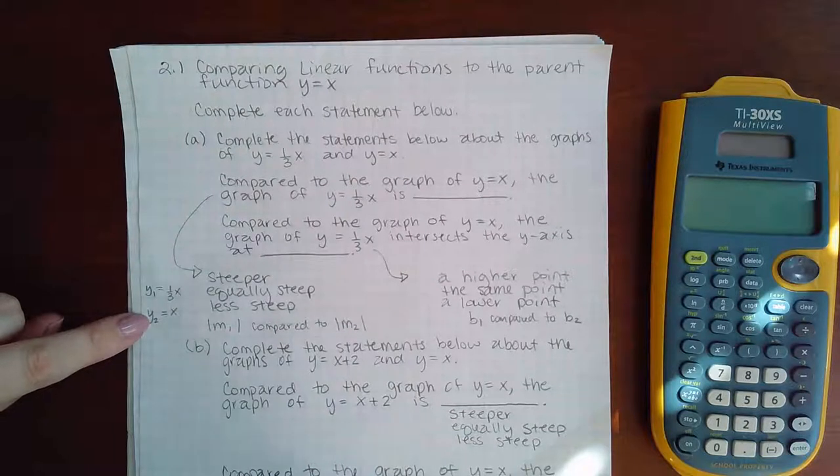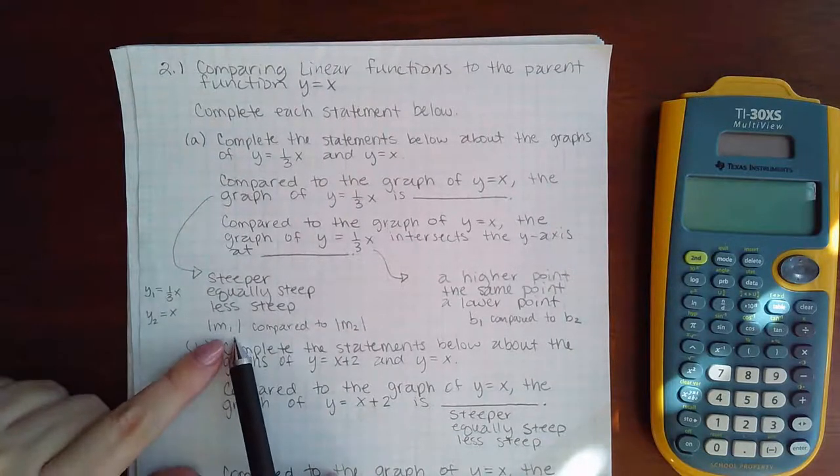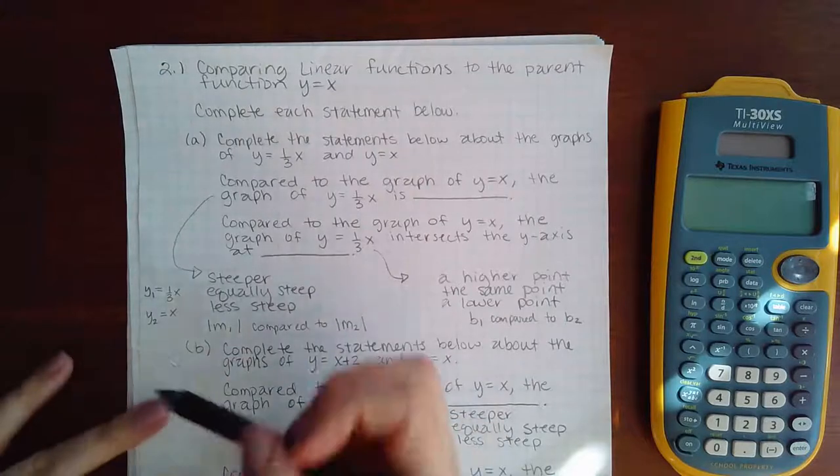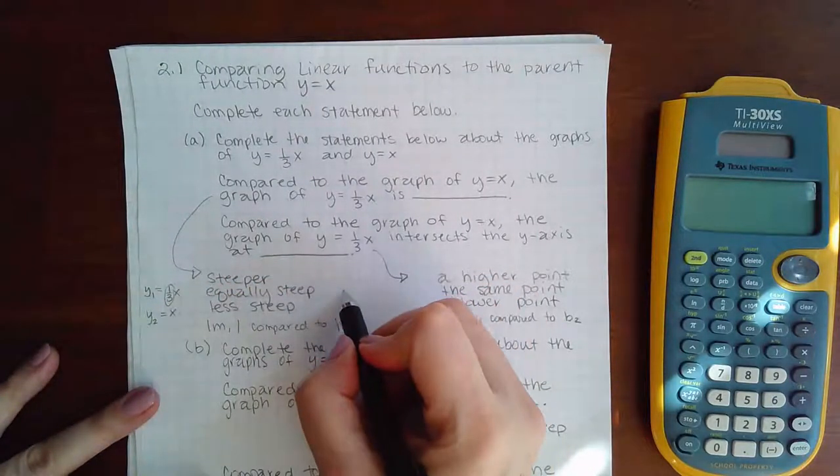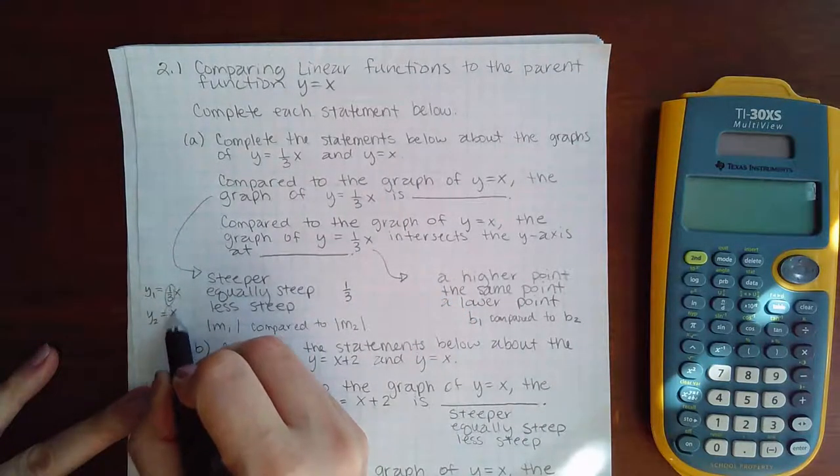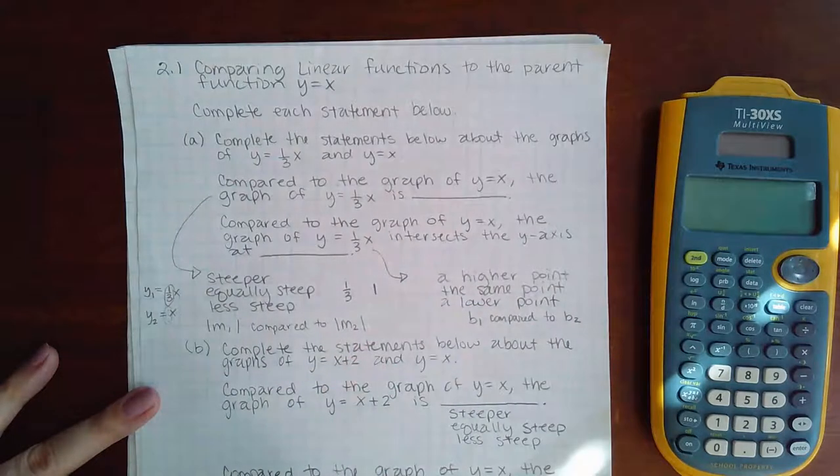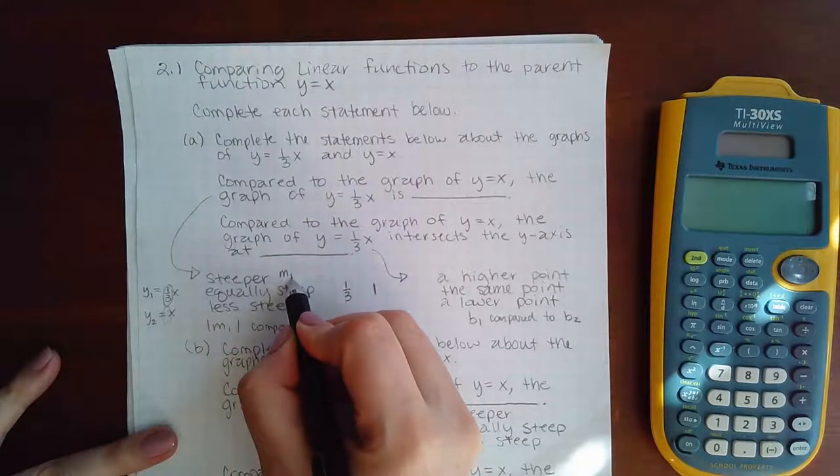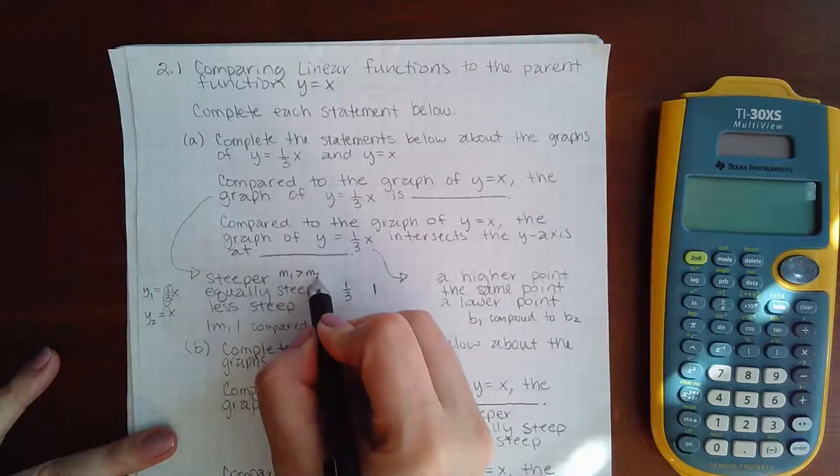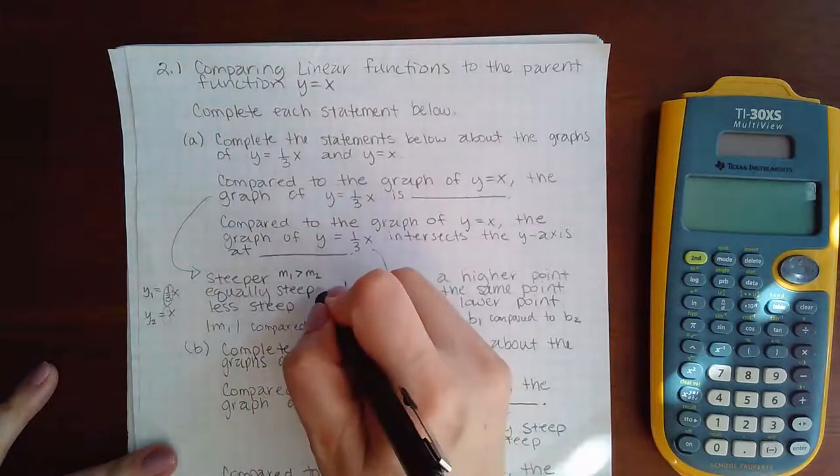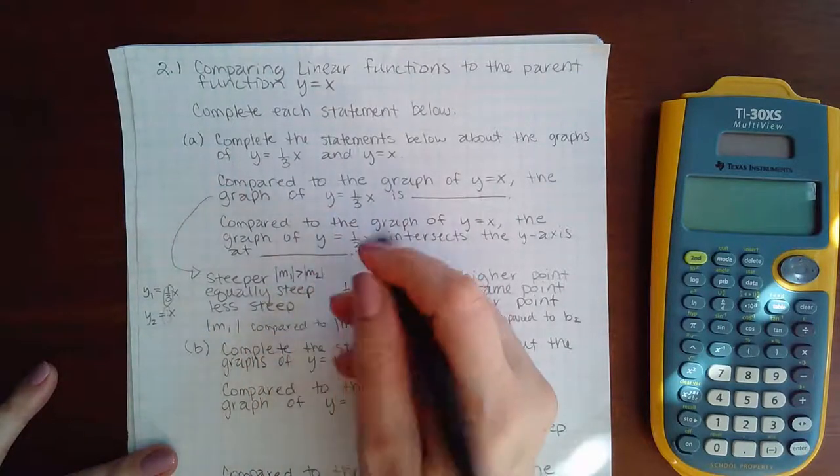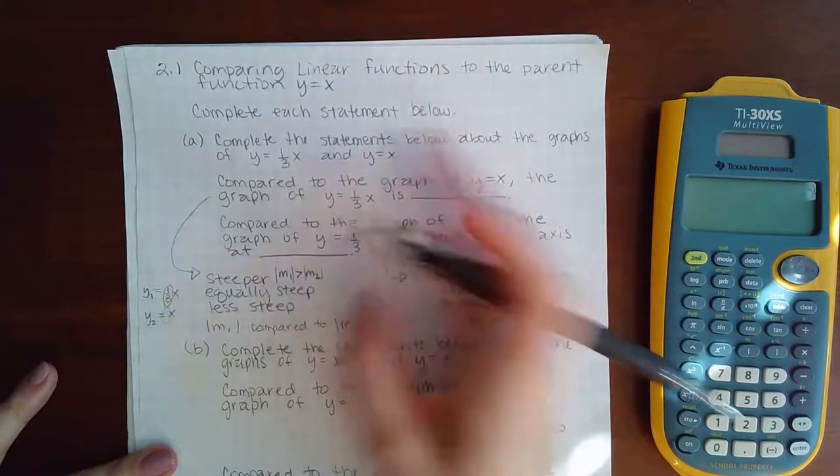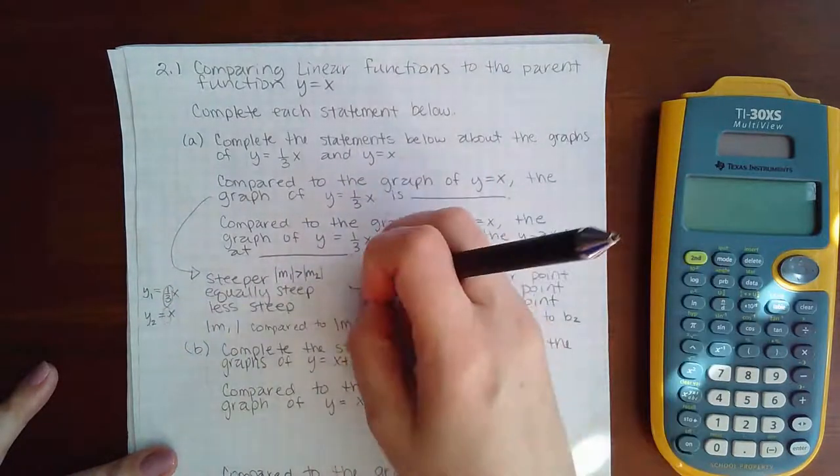Now what you need to do is take the absolute value of the first slope and compare it to the absolute value of the second slope. So in my case, my slope here, the absolute value of one-third is one-third, and then the slope here is actually an invisible one. Now here's the situation: if m1 is greater than m2, then you have a steeper case, and it should be the absolute value. We don't care about the sign, just the numbers. The sign will tell me what direction it goes, but that's not what they're asking me.